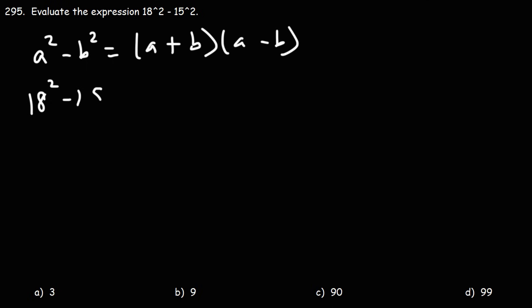So 18² - 15²... the square root of 18² is just 18, the square root of 15² is just 15, so it's 18 plus 15 times 18 minus 15.